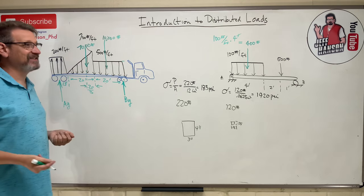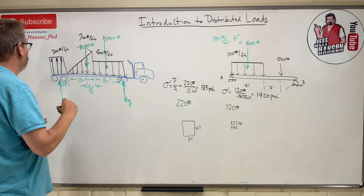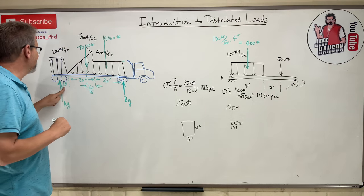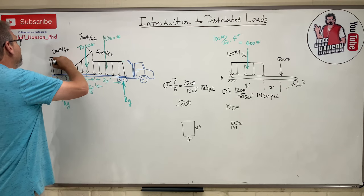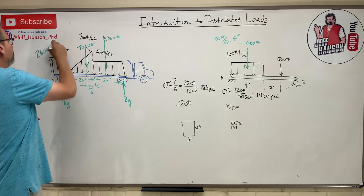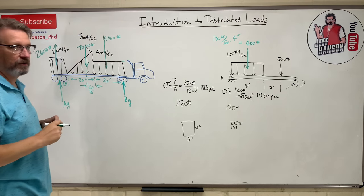And then over here, oh, the only tricky part about this is the arrows are going up instead of down. So this is 200 times 13, which would be 2,600. And I would put that right there. 2,600 pounds. And it's in the middle of the 13.